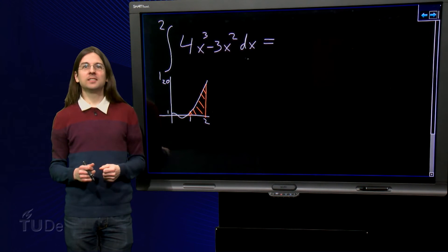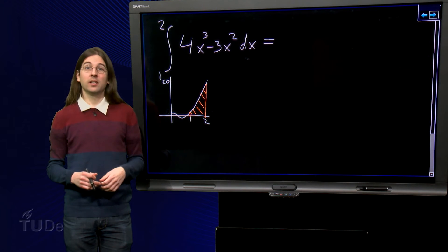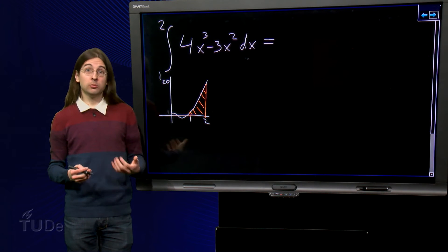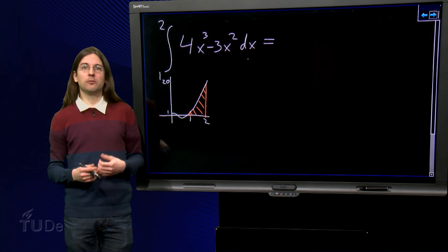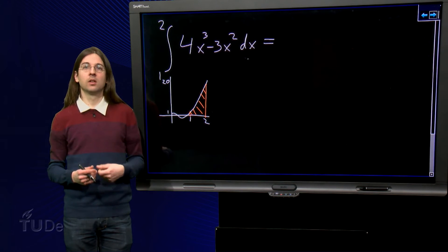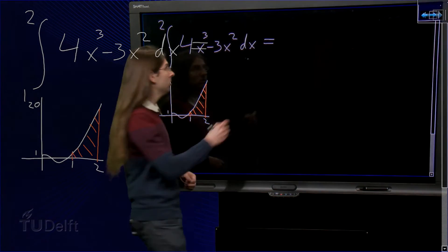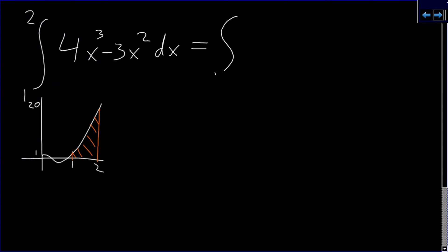Let's now apply these two rules in combination in the following example. The integral from 1 to 2 of 4x cubed minus 3x squared dx. We can split the integral as the integral from 1 to 2 of 4x cubed dx plus the integral from 1 to 2 of minus 3x squared dx.